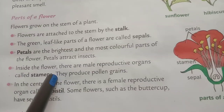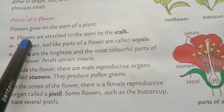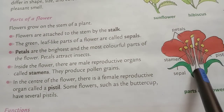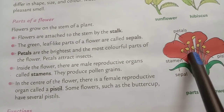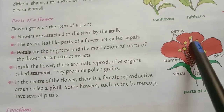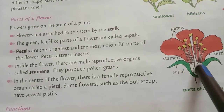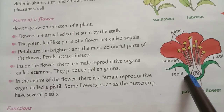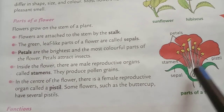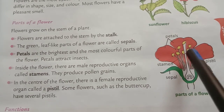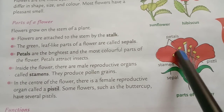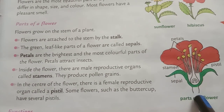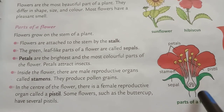Now, parts of a flower. Flowers grow on the stem and are attached to the stem by the stalk.